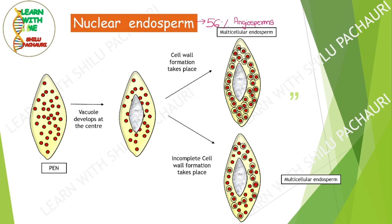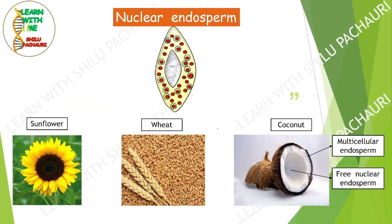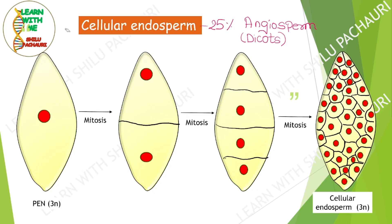That is how it forms multicellular endosperm. But sometimes cell wall formation remains incomplete, as you can see here — this results in an incomplete cell wall structure. Examples of incomplete cell wall formation include sunflower, wheat, and coconut — they all have nuclear type of endosperm. In coconut, the white colored portion is actually the multicellular endosperm, and the fluid inside the coconut is actually a free nuclear endosperm that nourishes the developing embryo.